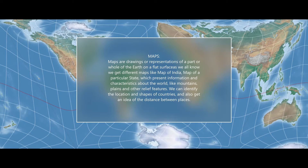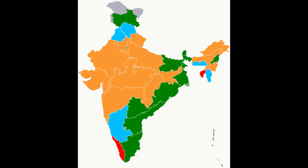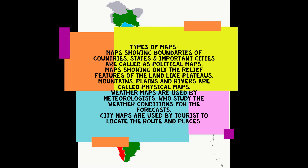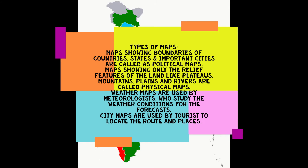City maps are used by tourists to locate routes and places. Builders and city planners also use maps to decide before building any structure. For example, if a builder decides to build a commercial complex where there are already two or three commercial complexes, he may face issues while selling his units. Maps are also used for aviation purposes, i.e., for air travel, and for navigation in waterways. There are also maps known as special thematic maps that show distribution of population, transport, natural resources, soil, forest, density of rainfall, etc. A book of maps is called an atlas.